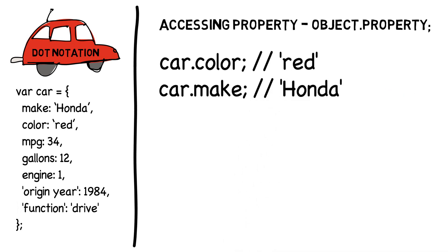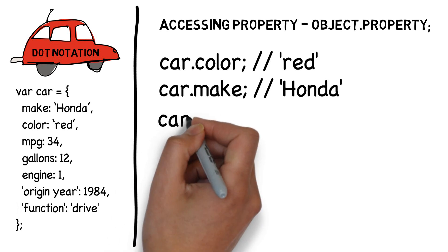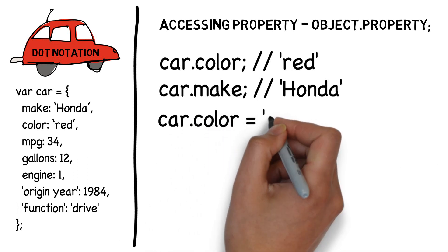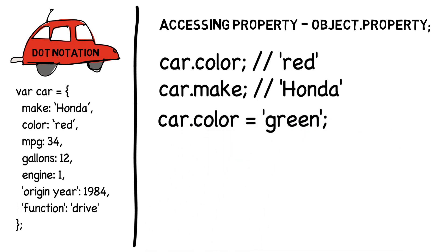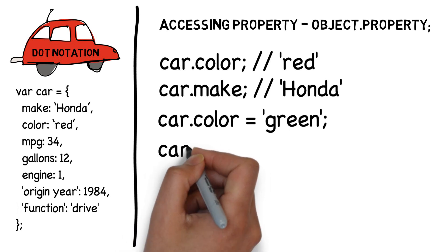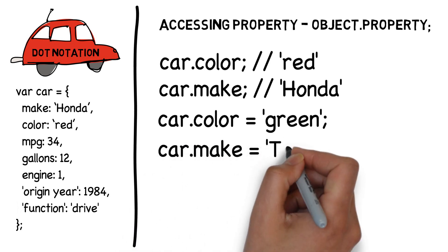We can also change the property values using dot notation as well. Suppose you wanted to turn the car green and turn it into a Toyota. We would write object car dot property color and assign it the value green. We would write object car dot property make and assign it the value Toyota.